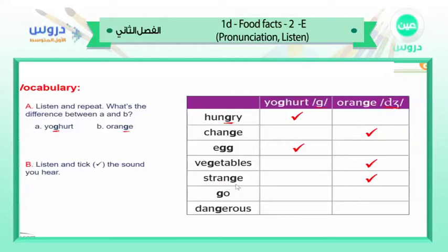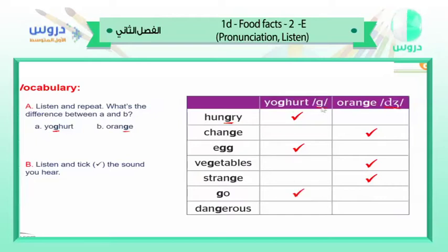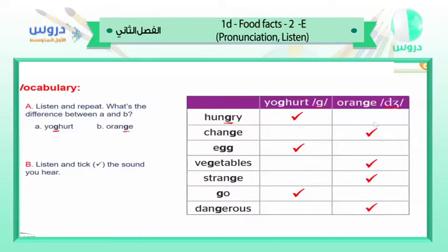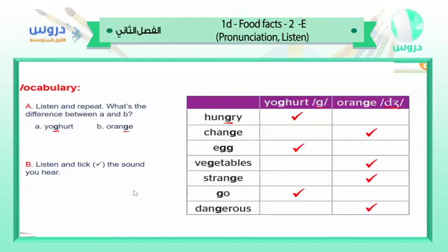In 'strange' it's the sound 'ja,' just like orange. 'Go,' 'go' — what do you think? Just like yogurt, 'ga' — excellent. 'Dangerous,' 'dangerous' — excellent, 'ja,' like orange — 'dangerous,' 'ja.' Very nice. So now we can see and know the difference between 'ga' and 'ja.'